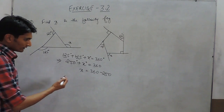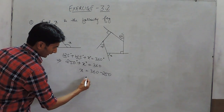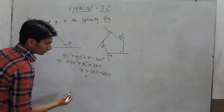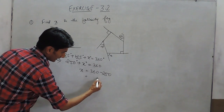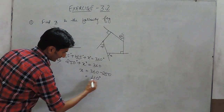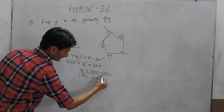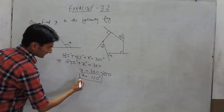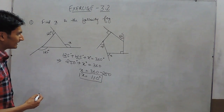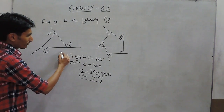So x will be equal to 360 minus 250. When 250 is subtracted from 360, it gives 110 degrees. So the value of x must be 110 degrees to satisfy this formula.